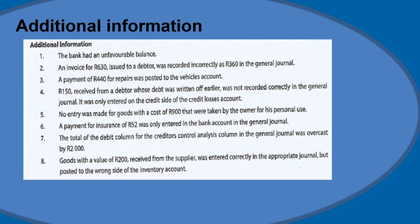Now we evaluate the additional information to see whether it will increase or decrease the amounts already in the trial balance. Point one: bank is in fact a liability and should have a credit balance. Point two: an invoice for 630 rand issued to a debtor was recorded incorrectly as 360 rand in the general journal. This means both accounts affected — sales and debtors — were recorded incorrectly. We calculate the difference of 270 rand and enter it to take the 360 up to 630 rand.